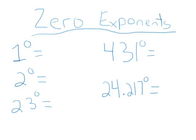Zero exponents are incredibly easy because the answer is always 1. 1 to the zero power is 1, 2 to the zero power is 1, 23 to the zero power is 1. Do you get the hang of it yet?